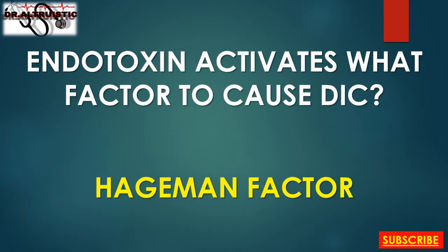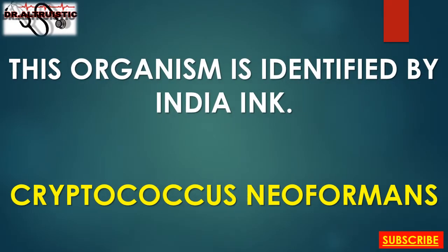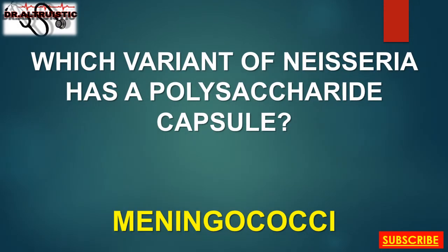Endotoxin activates what factor to cause DIC? Hageman factor. PAS-positive macrophages are found in this disease: Whipple's disease. This organism is identified by India ink: Cryptococcus neoformans. Which variant of Neisseria has a polysaccharide capsule? Meningococci.